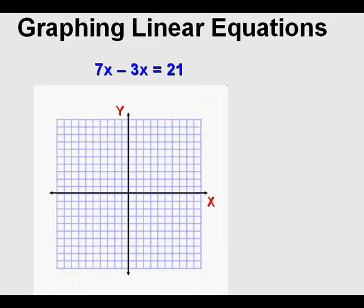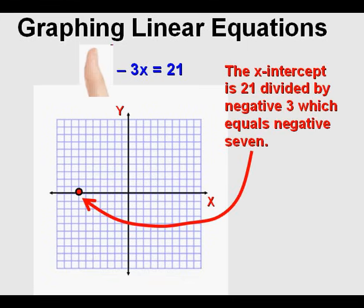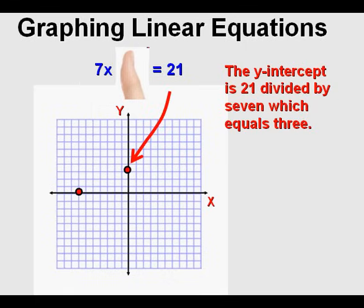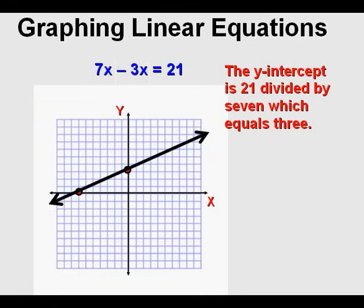Let's review. If you have an equation in standard form, you can graph it with two points. Cover the y-term, then solve for x to get the x-intercept. The x-intercept here is 21 divided by negative 3, which equals negative 7. Mark the x-intercept on the x-axis. Next, cover the x-term and solve for y to get the y-intercept. The y-intercept is 21 divided by 7, which equals 3. Mark the y-axis at y equals 3. All that remains is to draw the line through the two points.